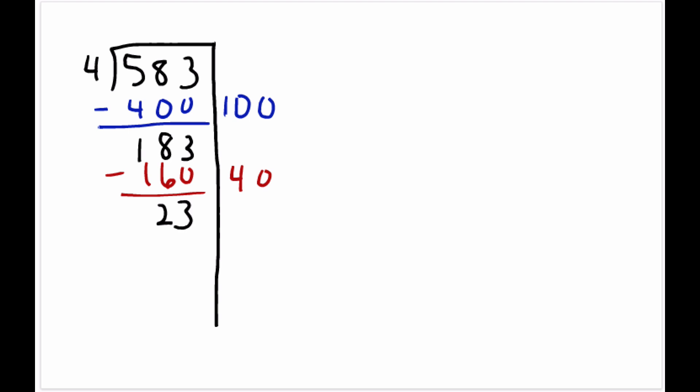And then the students would say, well, how many times can we subtract 4 from 23? And oh, we could do 5 times and that gives us 20 and we subtract and we get 3 left over. So now the total of all of these partial quotients over here is 145 with a remainder of 3.